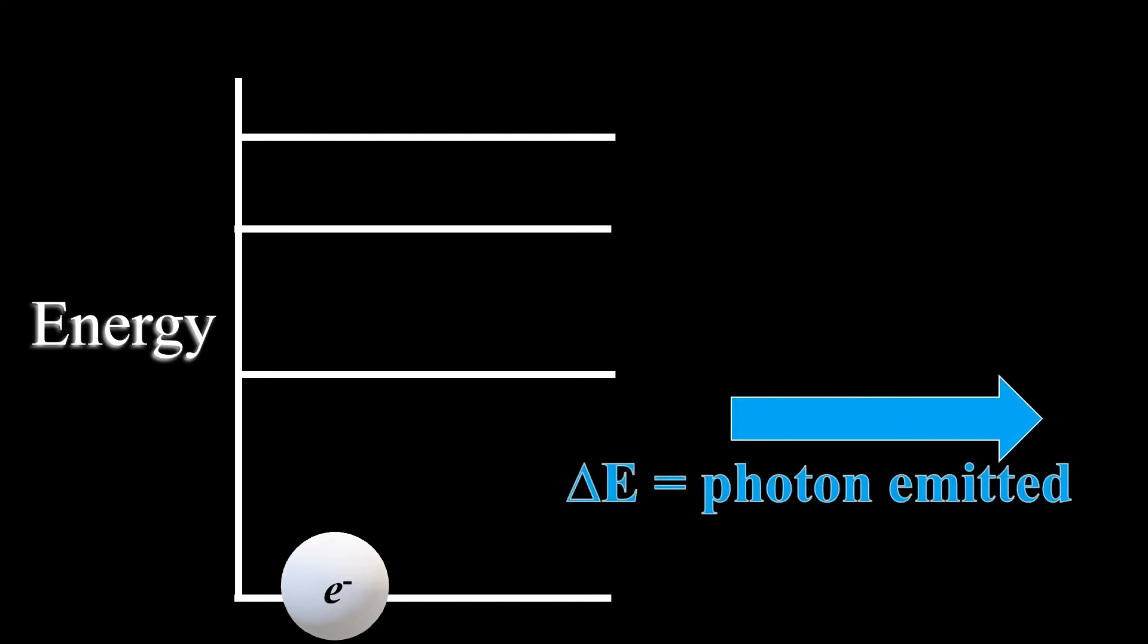And the photon emitted, or energy lost, is equal to the difference in energy of the energy levels. You can think of these like steps in a staircase.